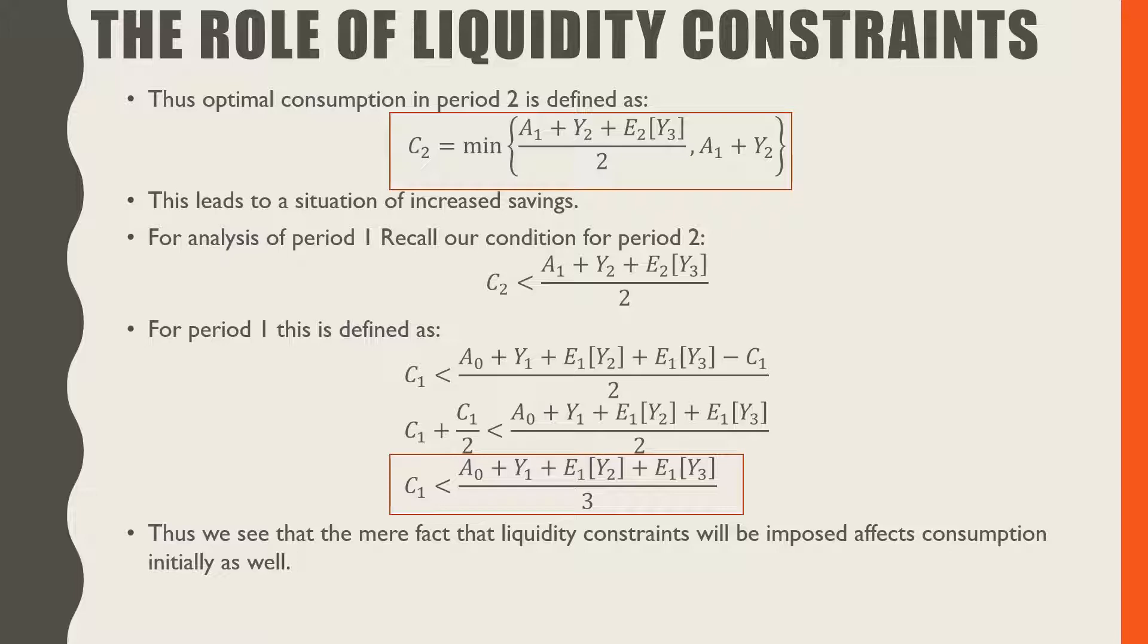Plus the expected labor income in period two based on the information in period one plus the expected labor income in period three based on the information in period one minus the consumption in period one all over two.